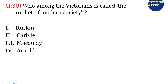Question 30 (last question): Who among the Victorians is called the prophet of modern society? Option 1: John Ruskin. Option 2: Thomas Carlyle. Option 3: Thomas Babington Macaulay. Option 4: Matthew Arnold. The right option is option number 4, Matthew Arnold, who is known as the prophet of modern society.